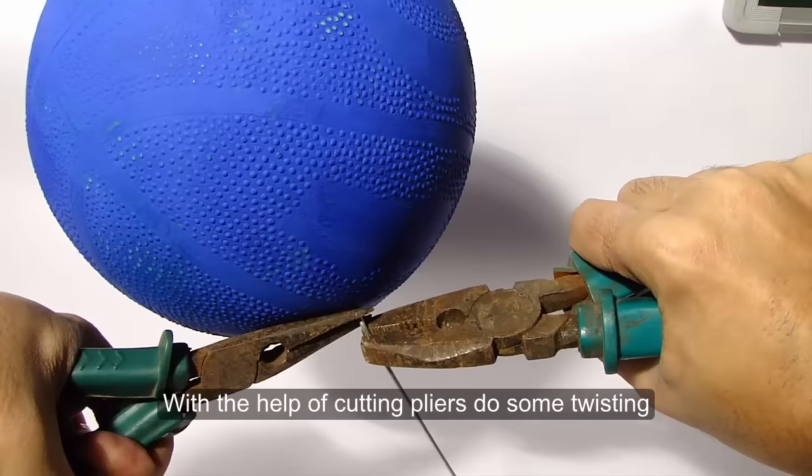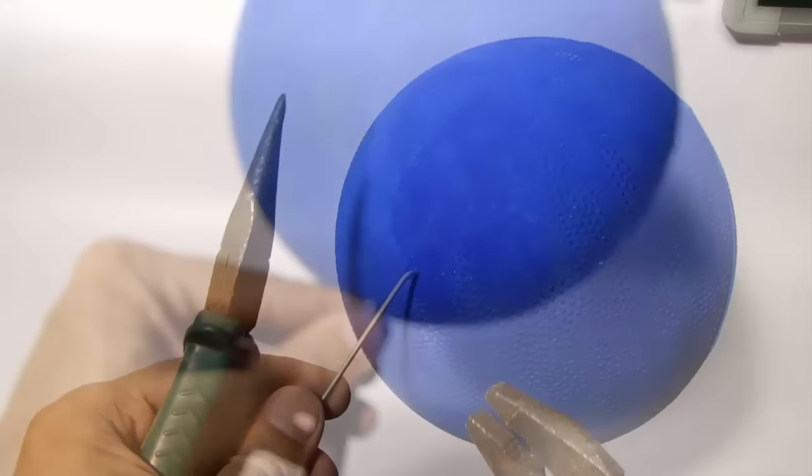When you are done with your coloring, twist the spoke with cutting pliers as shown in the video.